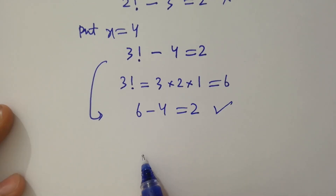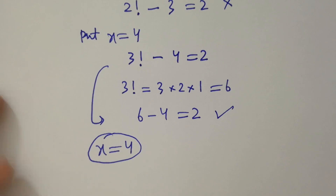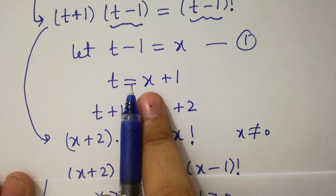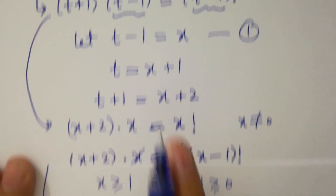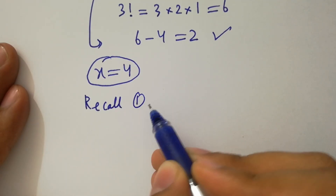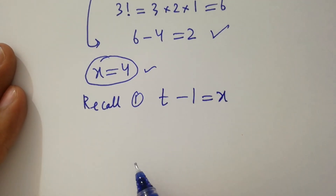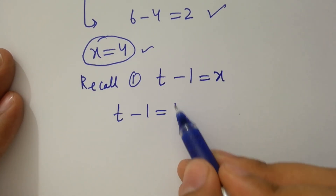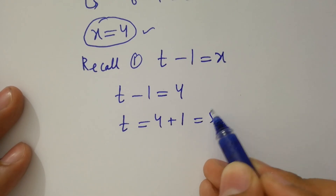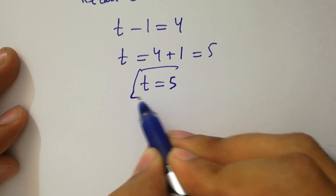So x equals 4. Recalling equation 1, t minus 1 equals x equals 4, therefore t equals 4 plus 1, which is 5. The value of t is equal to 5.